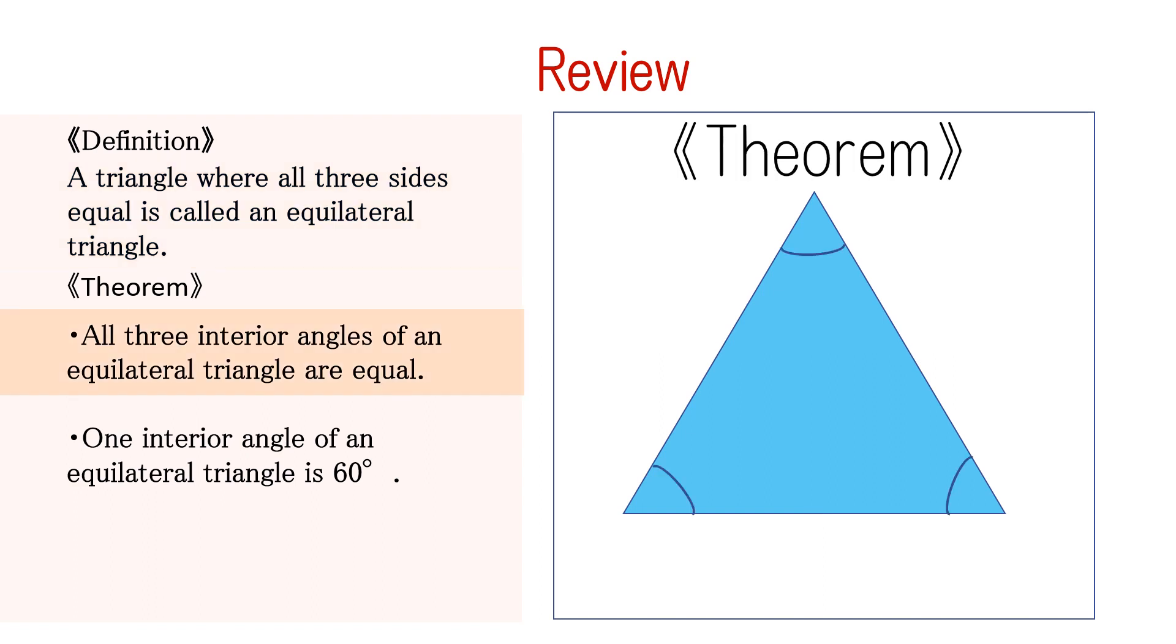Next, let's review the theorem. All three interior angles of an equilateral triangle are equal. This means that all interior angles are equal because the two base angles are equal in an isosceles triangle.